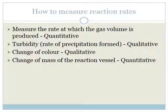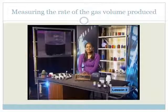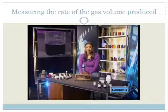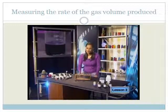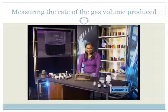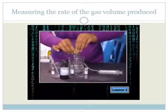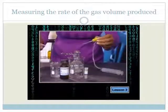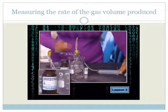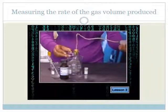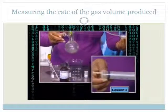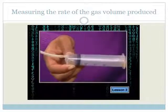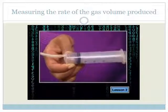This may all seem a bit abstract, which is why we have videos to show you what we're talking about. Do you know how we could measure the reaction rate of a reaction that produces a gas? We could collect the gas produced. One method is to use a gas syringe. Here we have magnesium reacting with hydrochloric acid — hydrogen gas is produced. As the gas forms, it rises and pushes the plunger of the gas syringe back. We can then measure the volume of gas produced in a specific time.